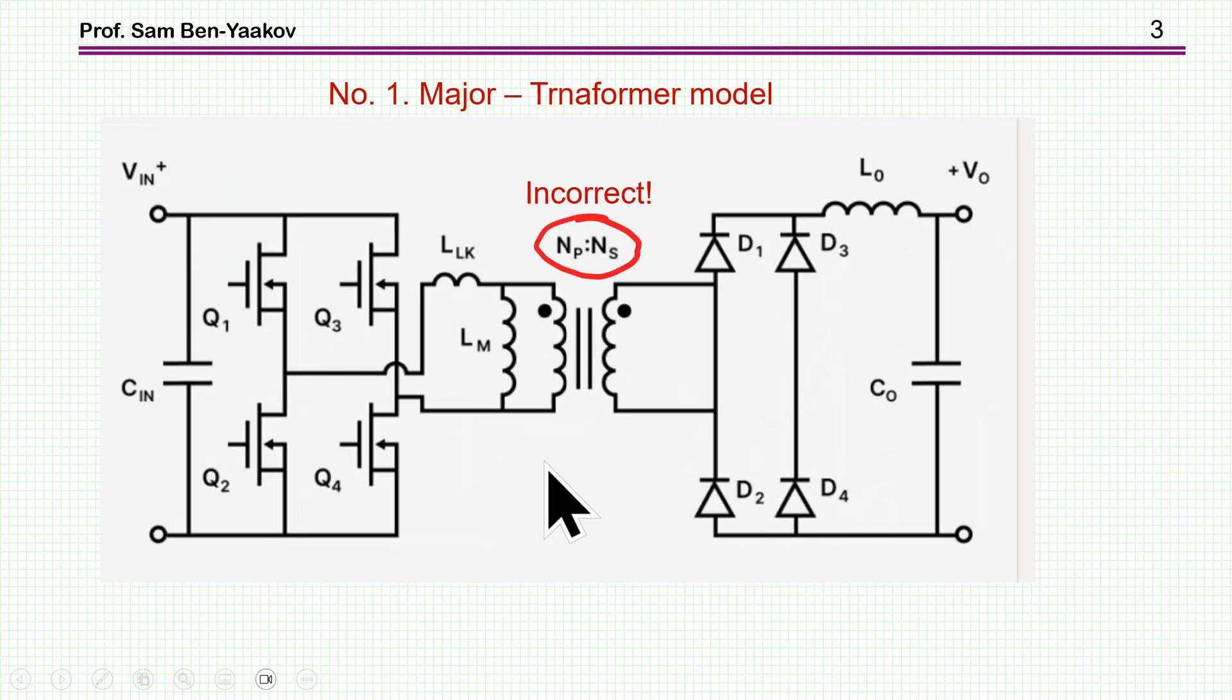But there is another problem, which is really a major one, and this is the question of understanding magnetic modeling. So here we have a model of a transformer with the leakage, this is the leakage magnetization. And in the conventional way, we have an ideal transformer with turns ratio of number of turns of the primary divided by the secondary. This is incorrect.